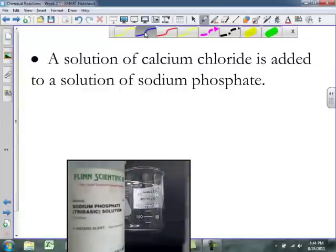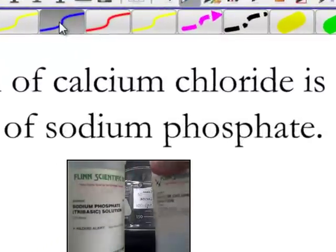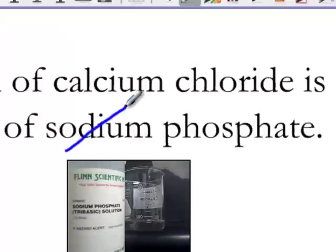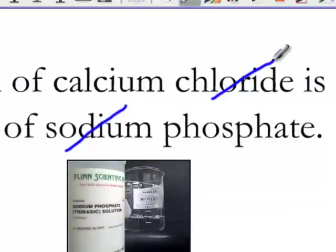Now, we just have to find our spectator ions. If we take a look, the only spectator ion that jumps out at us is sodium. Sodium is a spectator, which means that chloride will be a spectator as well.